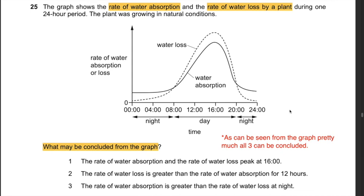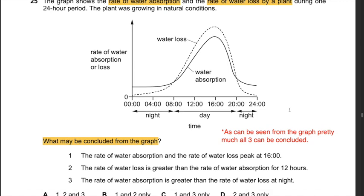Question 25: A graph shows the rate of water absorption and water loss over 24 hours. Conclusion 1 — both rates peak at hour 16 — is correct from the graph. Conclusion 2 — the rate of water loss is greater than absorption for 12 hours — is also correct. Conclusion 3 — the rate of water absorption is greater than water loss at night (20:00–24:00) — is also correct. The answer is A: 1, 2, and 3.